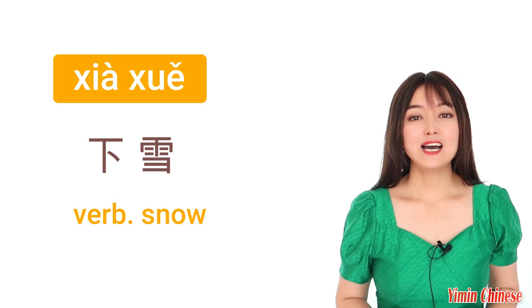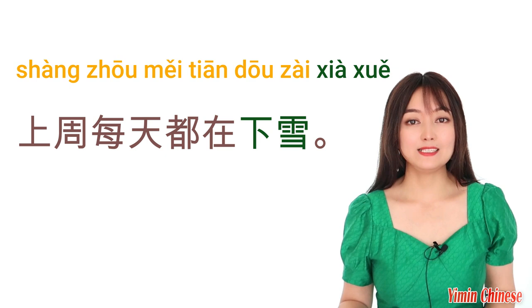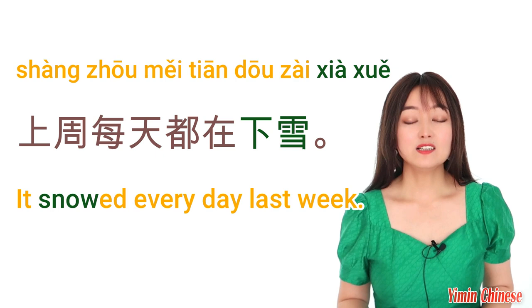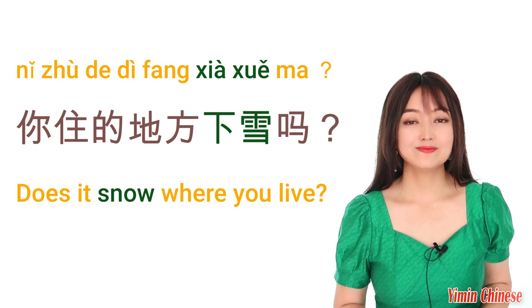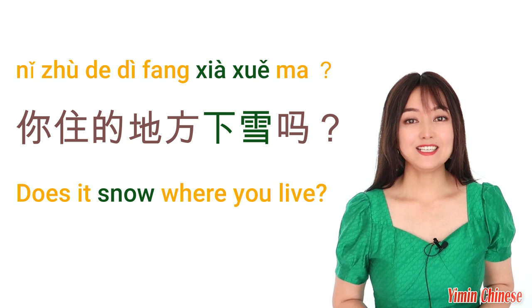Now the verb for snow is 下雪 — coming down from the sky. 比如说，上周每天都在下雪。It was snowing every day last week. 还有一个问题：你住的地方下雪吗？Does it snow where you live?